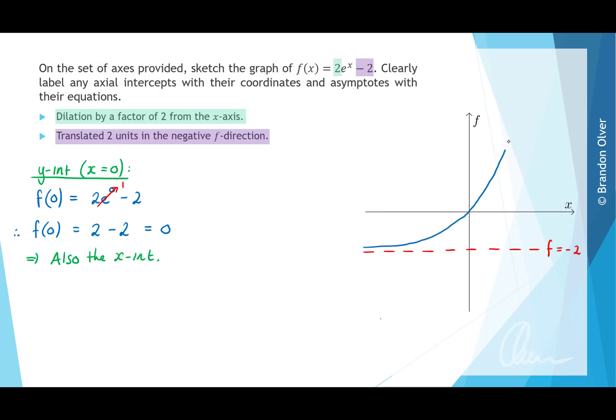So taking into account the two transformations that have occurred, our graph is going to look something like this, where this x and y-intercept occurred at (0, 0).